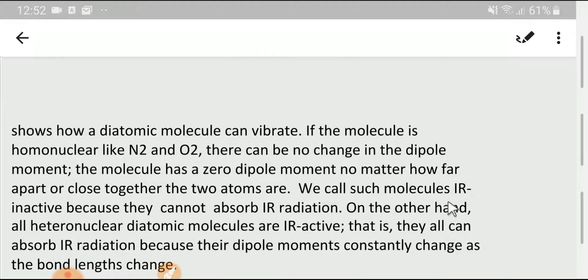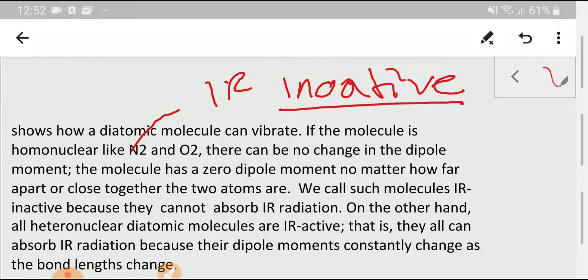We call such molecules IR inactive. That is, nitrogen is IR inactive because it is homonuclear. As a result, due to this vibration, no dipole moment change will happen, so it is IR inactive. That is, nitrogen is not a greenhouse gas.